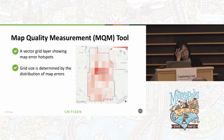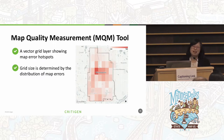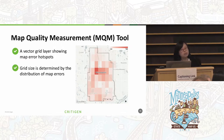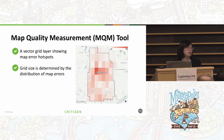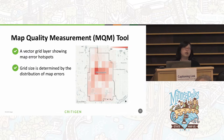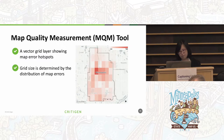The map quality measurement tool was developed centrally to respond to my questions and questions people ask me. We create vector grid layers to show the hotspot for map errors, and we want the grid size to be flexible and dynamically determined by the distribution of the map errors. The following slides will walk you through how the logic works behind this MQM tool.